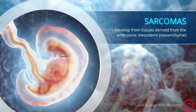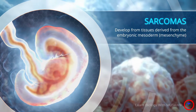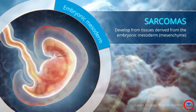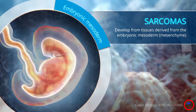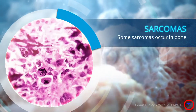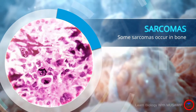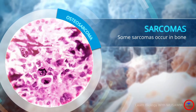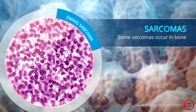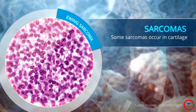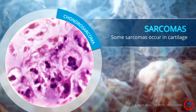Sarcomas are cancers that develop from tissues derived from the embryonic mesoderm or mesenchyme. Some sarcomas occur in bone such as osteosarcoma and Ewing sarcoma, or cartilage called chondrosarcoma.